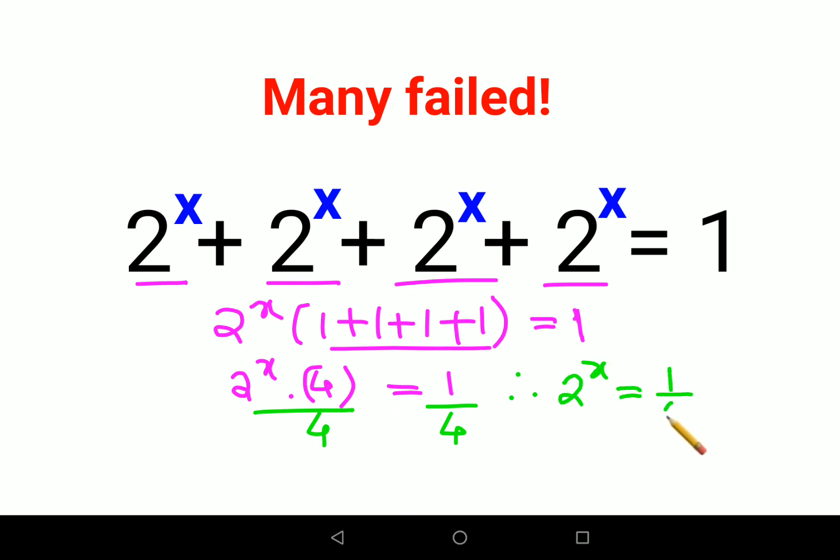Now please understand students, this 1 upon 4 can also be written as 4 raised to minus 1. Why? When you have 1 upon a raised to n, this can be written as a raised to minus n when taken in the numerator. So since 1 upon 4 had the index as just 1, when I take it in the numerator I will have 4 raised to minus 1.